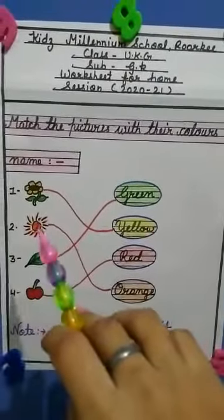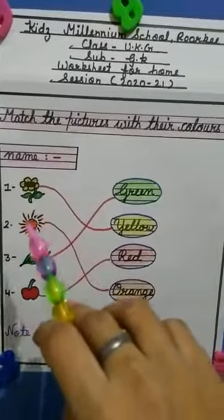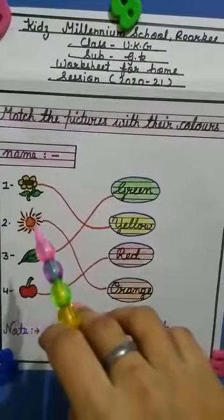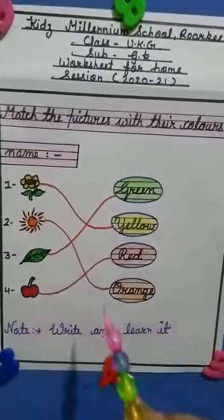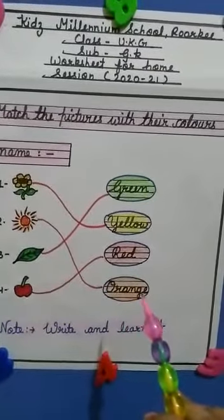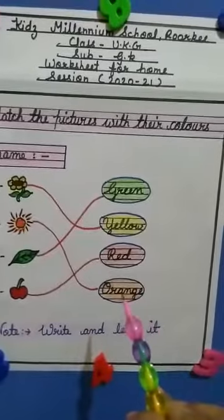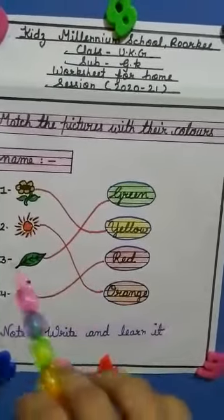Number two, second pick is sun. And sun is what color? Orange. So you will match it with its color name O-R-A-N-G-E, orange. Orange means narangi.